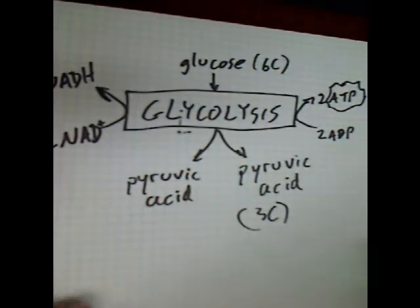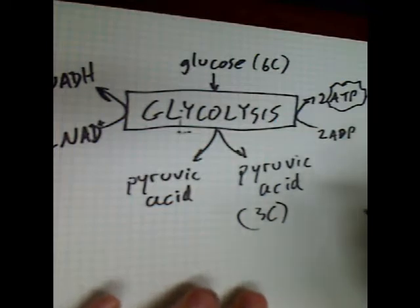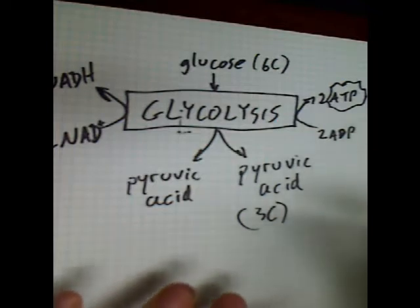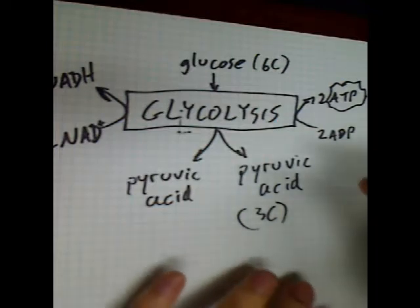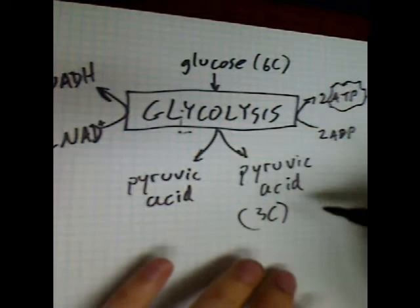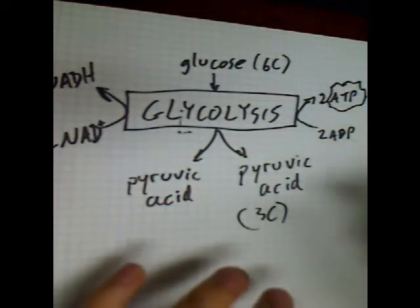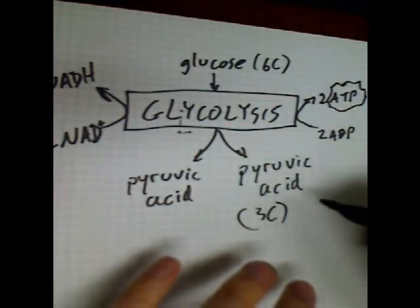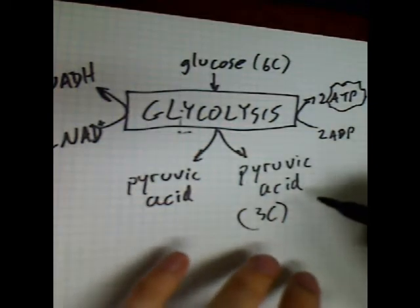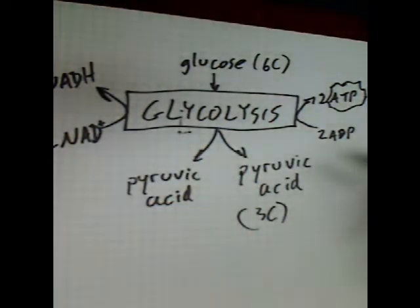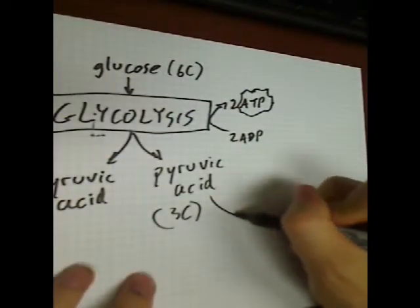What happens to the pyruvic acid? In aerobic respiration — and we'll talk about what happens in anaerobic respiration later — for now we'll stick with what happens when there is oxygen present and the cell can use the oxygen. The pyruvic acid is going to be sent to another reaction that sometimes is called the bridge reaction.